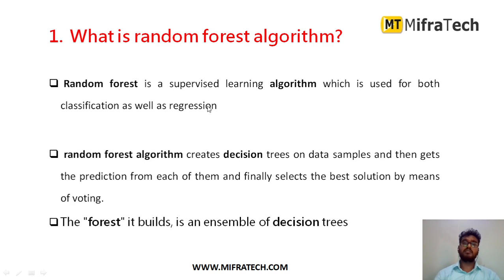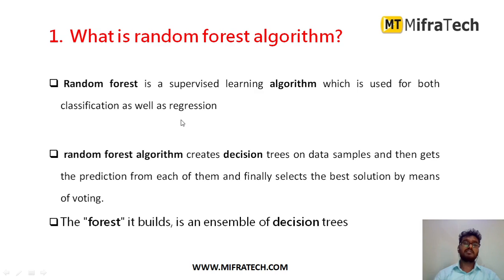Random Forest is a supervised machine learning algorithm. It is mainly used for both classification and regression problems. What Random Forest does is it creates n number of decision trees based on our dataset. After that, each decision tree will predict some output. It then takes the majority voting of all the outputs and finally selects the best solution by means of voting. That is why we call it a forest — because it creates n number of decision trees during training.